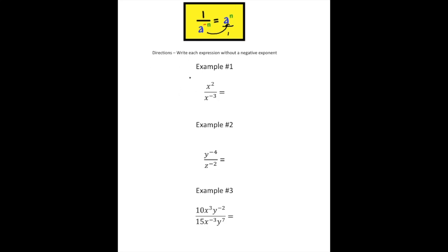Let me show you what I mean by this. Here we have x squared over x to the negative third. To rewrite this, we want to make this a positive 3, not a negative 3. So we're going to take this x to the negative third and bring it up to the numerator, writing it now as a positive x to the third. Then x to the third times x squared gives us x to the fifth, with a 1 on the bottom — so this equals x to the fifth. The important thing is, to make this exponent positive, we had to bring it up to the top.